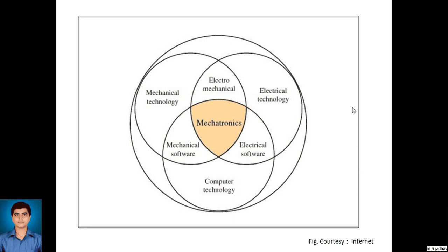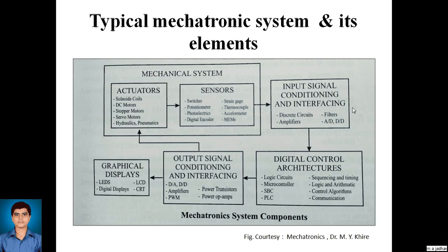We involve all branches in one — that is mechatronics. On the screen we are looking at a typical mechatronic system and its different elements. Basically there are six different elements: the first is a mechanical system made of sensors and actuators; then input signal conditioning and interfacing; then digital control architecture; then output signal conditioning and interfacing; and lastly graphical displays. Any system may have all these components or may have one less — for example, in many systems we cannot find graphical displays.